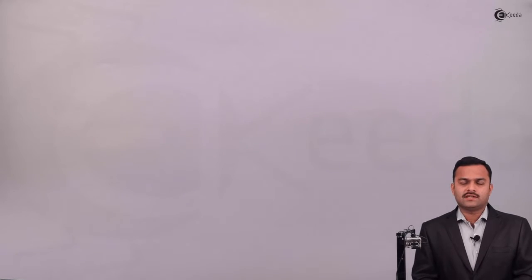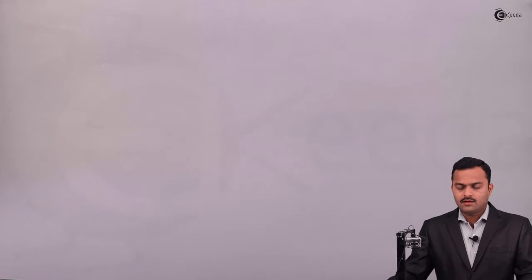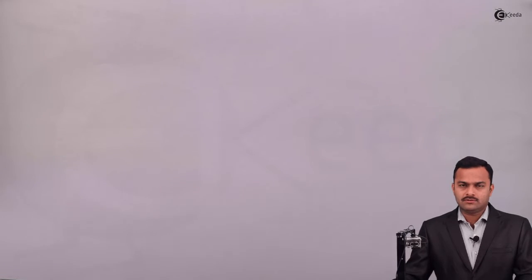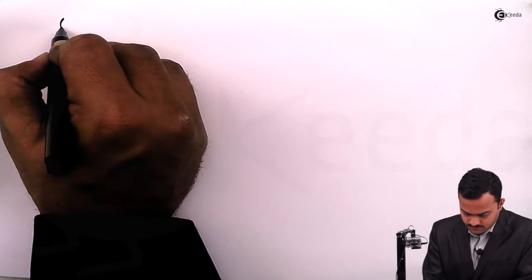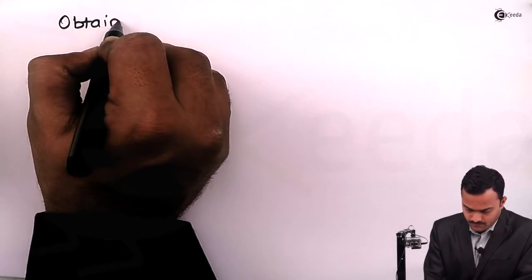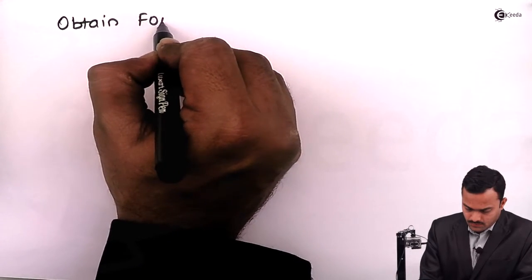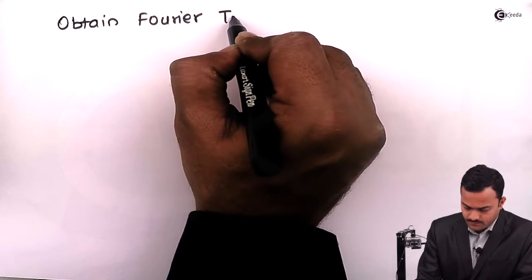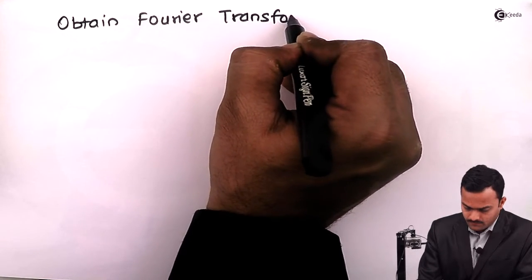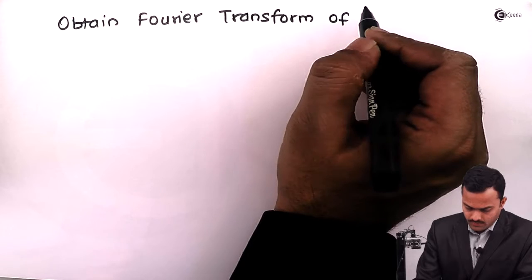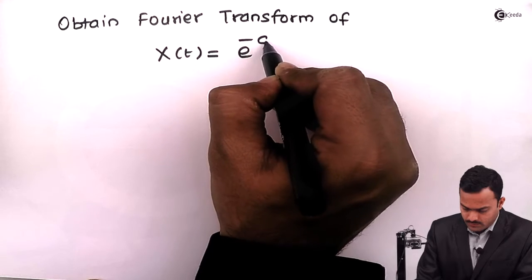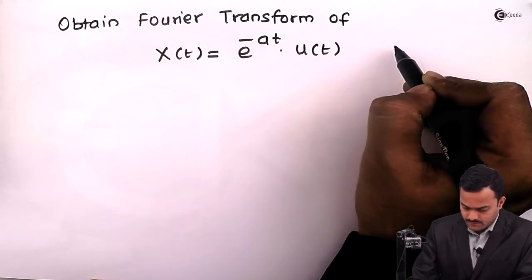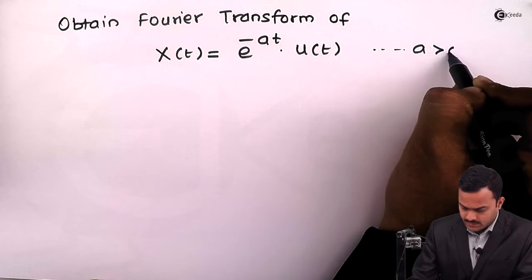Problem number one based on continuous time Fourier transform. Hi students, in this video we are going to see a problem based on continuous time Fourier transform. The problem is: obtain the Fourier transform of x(t) = e^(-at) u(t), where a is greater than zero.